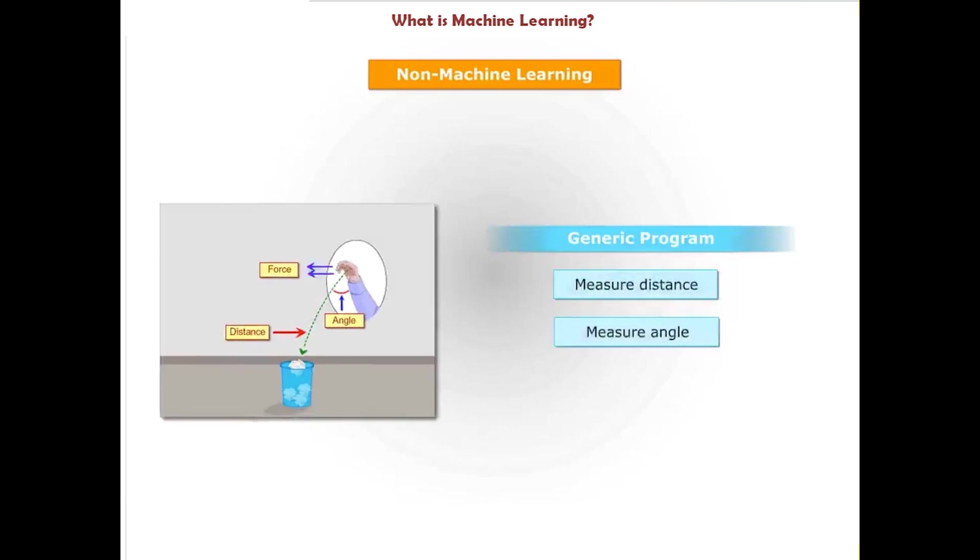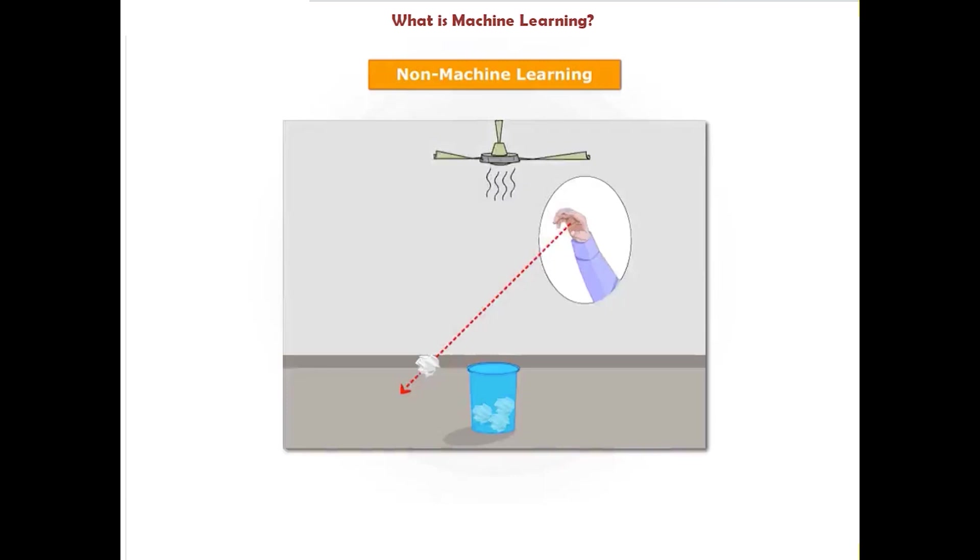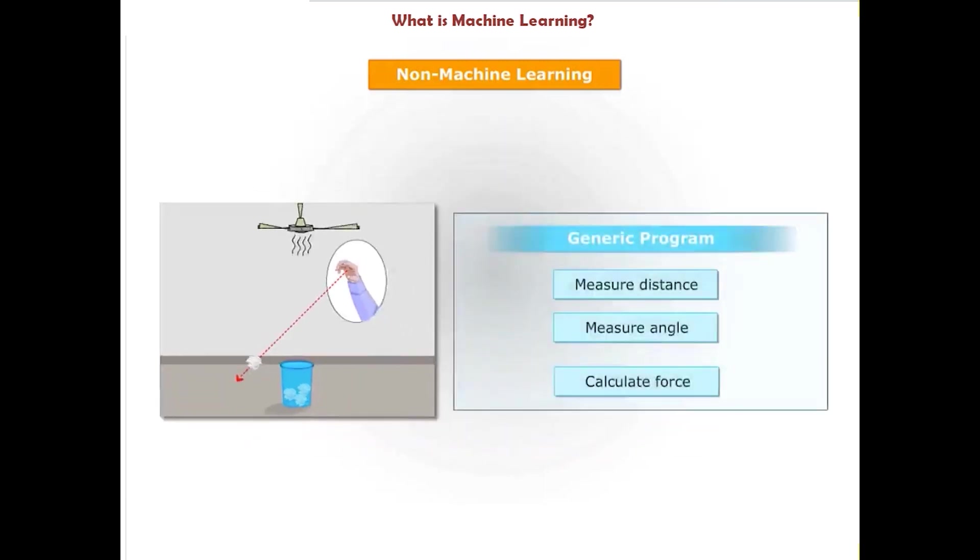Now if you add a fan to your setup, this program will miss the target every time and at the same time will not learn anything from its failed attempts. To get the outcome right you need to reprogram considering the wind factor in your formula.